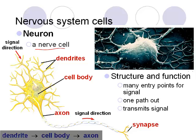Key characteristics of the neuron: there are many entry points but only one pathway out, and it transmits signals to tell your body what's happening in the environment. The order is always dendrite, cell body, axon — remember the acronym DCA.